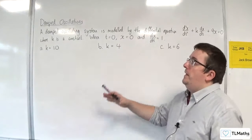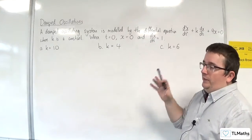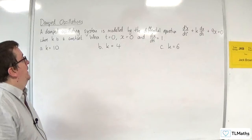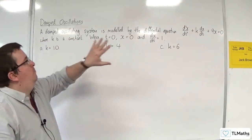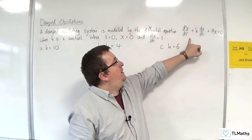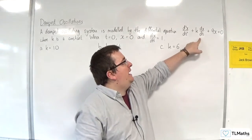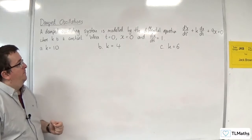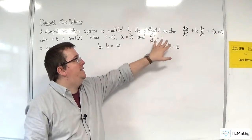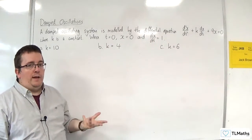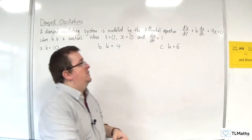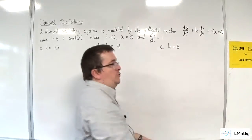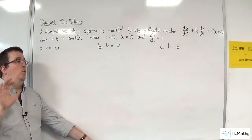In this video, we're going to be looking at a damped oscillating system. A damped oscillating system is modelled by the differential equation d²x/dt² plus k·dx/dt plus 9x equals 0, where k is a constant. When t equals 0, x equals 0, and dx/dt is equal to 1. Essentially, it looks like simple harmonic motion with an extra term — this k·dx/dt — and we're going to investigate what that does.